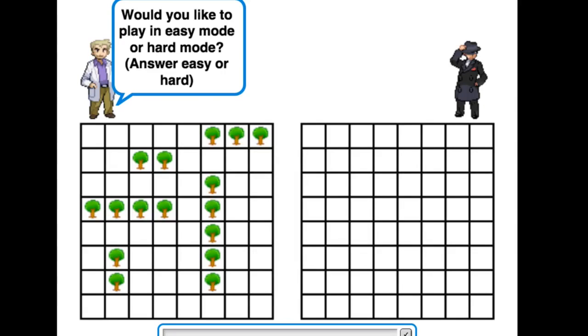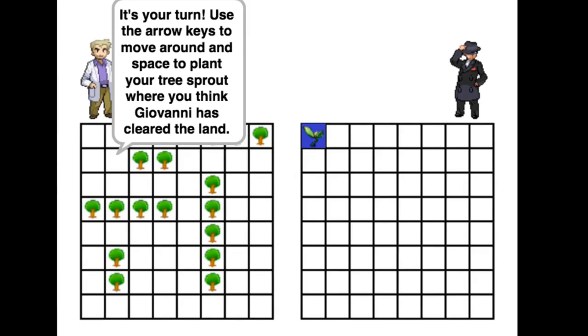Professor Oak then asks the player what difficulty they'd like to play. In easy mode, the CPU simply chooses random squares. In hard mode, the CPU has a strategy where it also checks the adjacent squares of any correct guesses it makes.